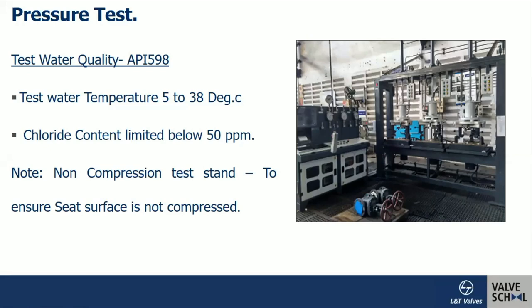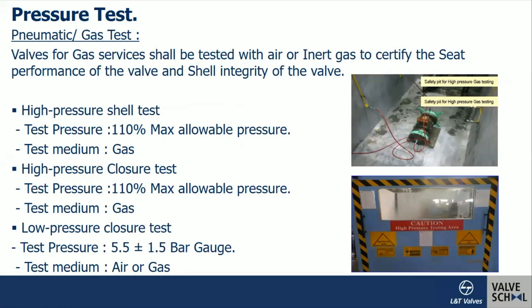Pneumatic and gas test safety is of prime importance. You can see the high pressure shell test — in case the customer wants a high pressure shell test, we can go to a maximum of 10% of the maximum allowable pressure. These tests are conducted after a successful hydrostatic shell test, considering the safety of the product. And for low pressure closure, as we discussed, generally it is 4 to 7 bar. Air or gas is used. Nitrogen gas is also used for your low pressure closure test; otherwise even dry air can be used for the low pressure test, as indicated in the different test standards.